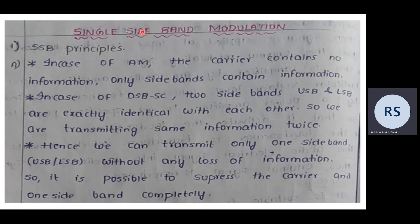Today we will discuss single sideband modulation, or SSB. In amplitude modulation, the carrier contains no information. The message signal, or baseband signal, contains the information at low frequency, while the carrier signal at high frequency helps pass the information from one place to another. The carrier signal does not contain any information — only the sidebands contain the information.